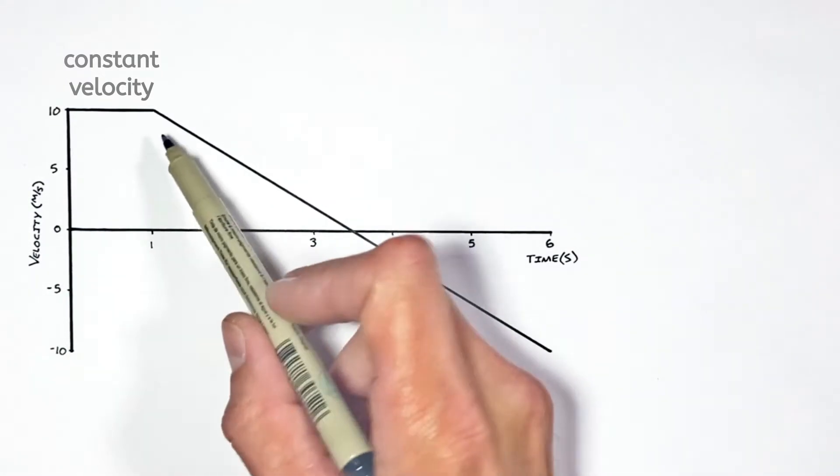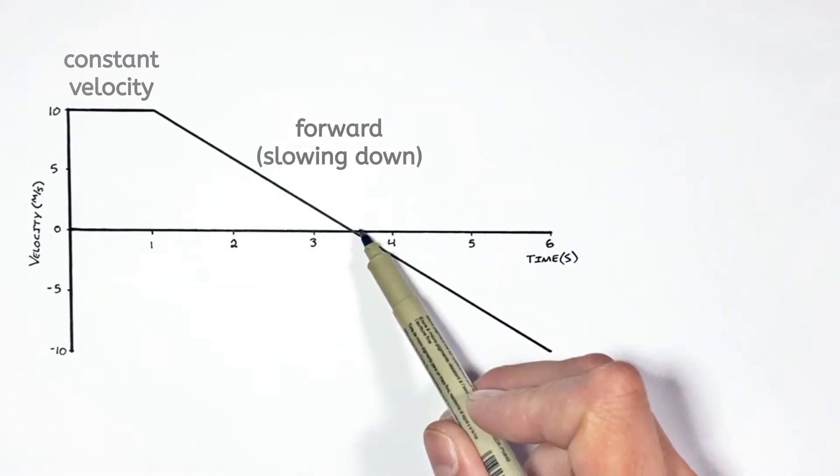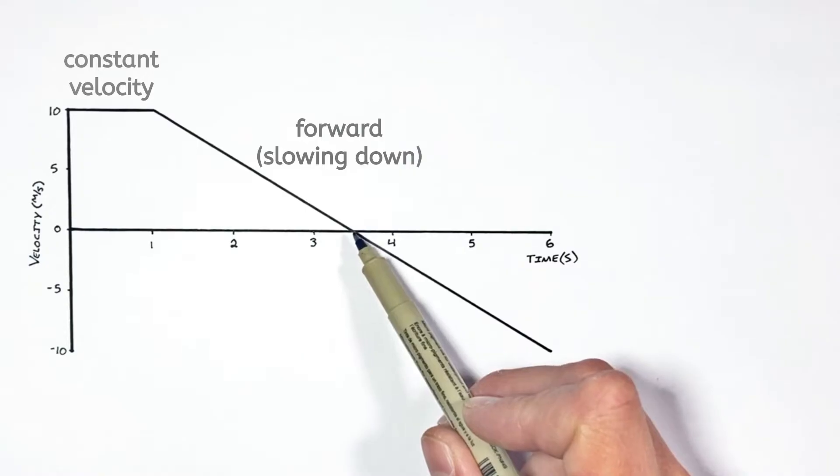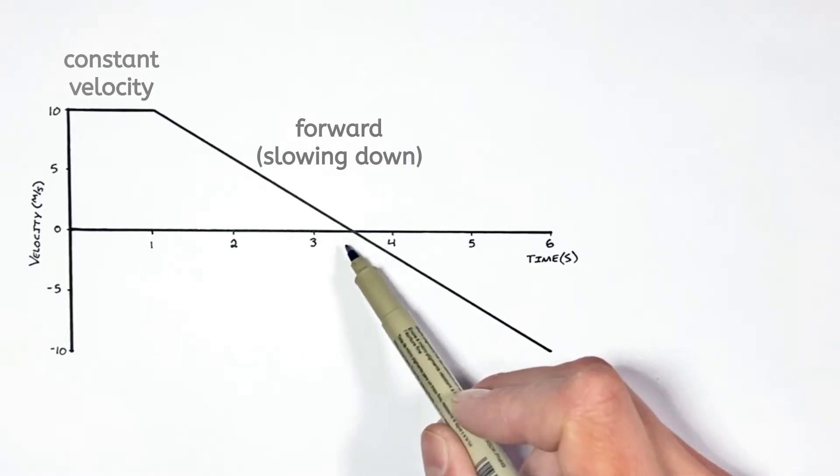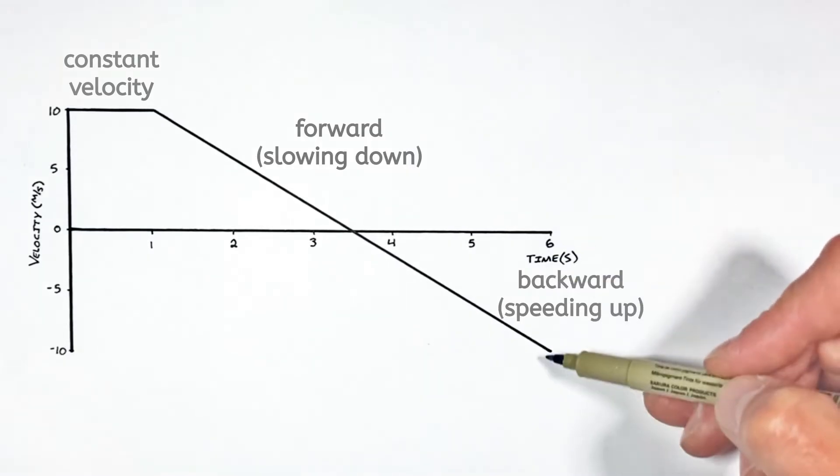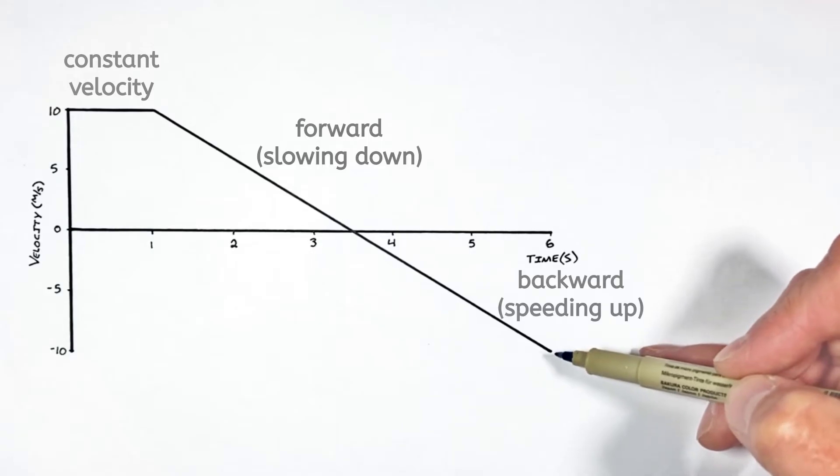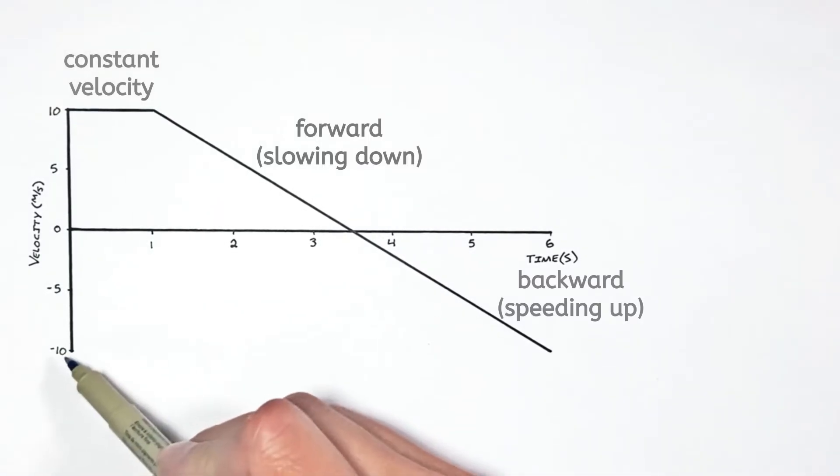But then after one second it continues to move forward but it's slowing down until this point in time right here when it's actually stopped. After that the object moves backwards and speeds up. We see this line, this velocity getting farther away from a value of zero, meaning it's speeding up, but in the negative direction.